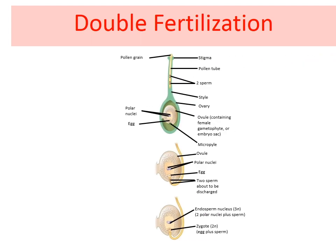So after pollen is deposited to the stigma, it must germinate and grow through the style to reach the ovule. The microspore or the pollen contains two cells: the pollen tube cell and the generative cell. The pollen tube cell grows into a pollen tube through which the generative cell travels. The germination of the pollen tube requires water, oxygen, and certain chemical signals.